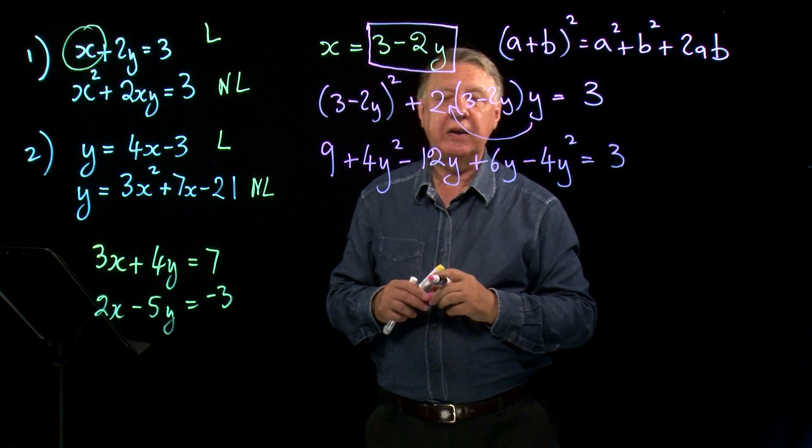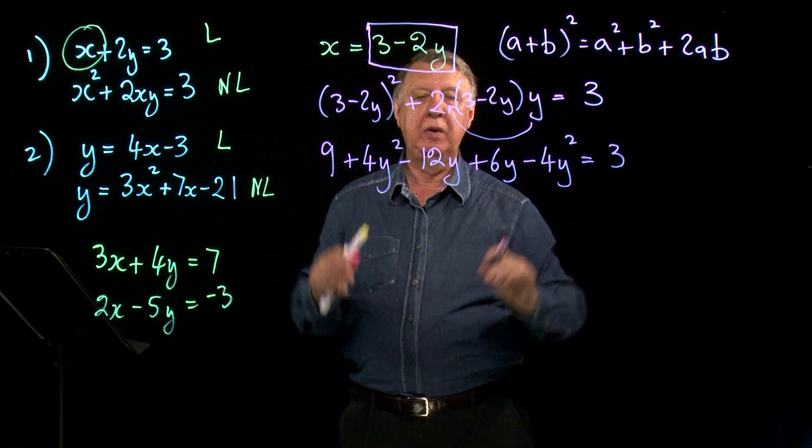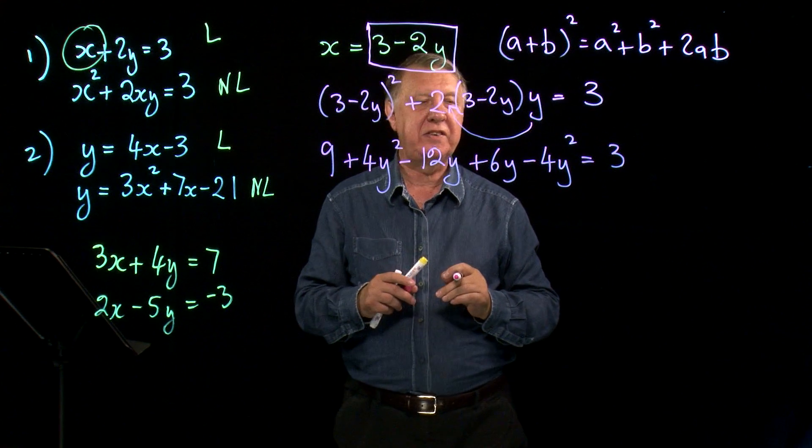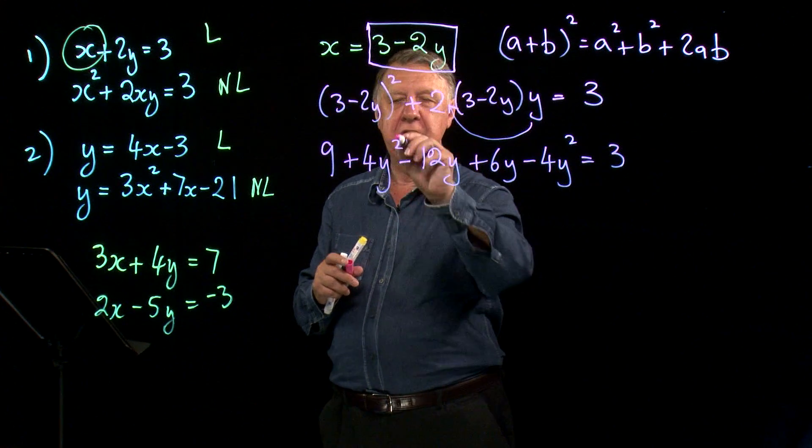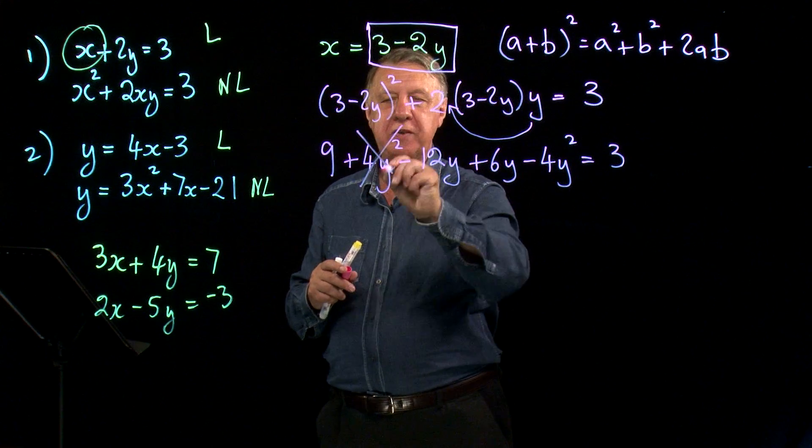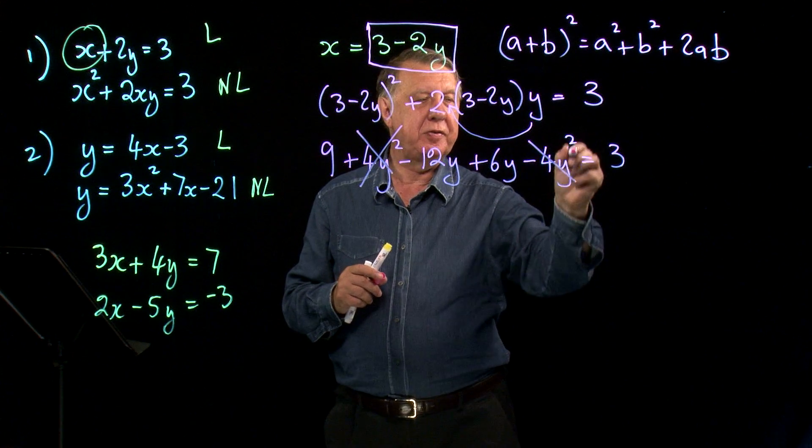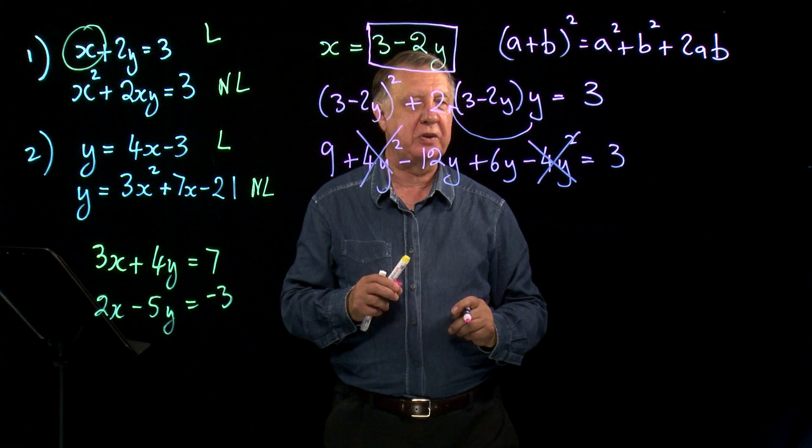So if you've done it correctly, you'll end up with something that looks a bit quadratic-y. But this one's actually a little bit simpler than that, because look at this: there's plus 4y² there and a minus 4y² there, so the y² actually disappears altogether.